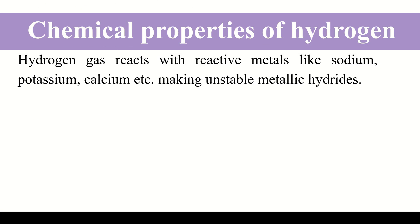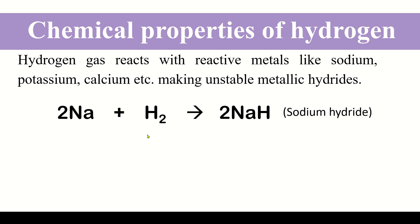Another chemical property of hydrogen is that hydrogen gas reacts with reactive metals like sodium, potassium, and calcium, and gives us unstable metallic hydrides. For example, sodium, when it reacts with hydrogen, gives us sodium hydride.